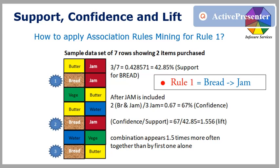Now let's look at how we do association rules mining for this rule 1. Support for bread is equal to the number of orders of bread — rows numbered 1, 2, and 3 — divided by total 7 rows, which is equal to 0.428571. This is roughly 42.86%. Confidence of bread is equal to the number of orders of bread and jam together — rows numbered 1 and 2 — divided by the number of orders of jam, which is equal to row 3.